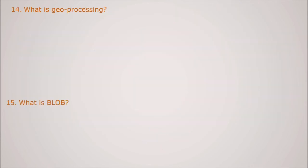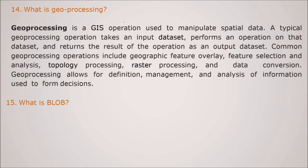What is geoprocessing? Geoprocessing is a GIS operation used to manipulate the spatial data. Spatial data is any data related to the space or locations. So geoprocessing is a GIS operation used to manipulate the spatial data. So a typical geoprocessing operation takes an input data set, performs an operation on that data set and returns the result of the operation to an output data set. A common geoprocessing operation includes the geographic feature overlay, feature selection and analysis, topology processing, raster processing and data conversion. So geoprocessing allows for definition management, analysis of information used to form the decisions.